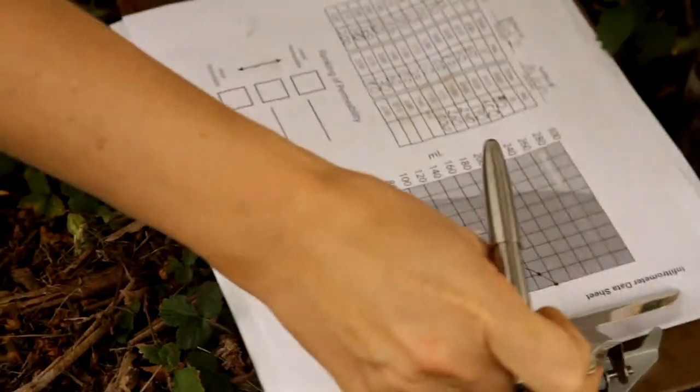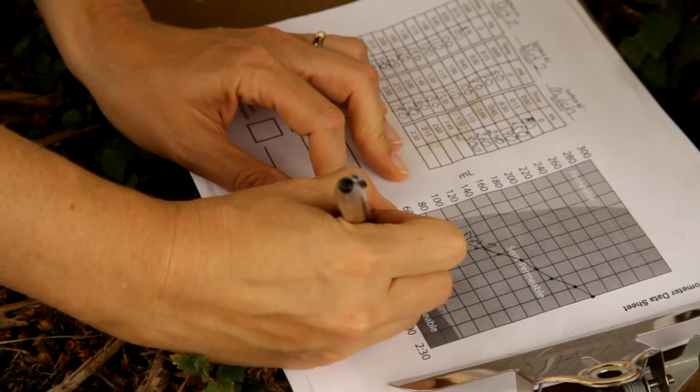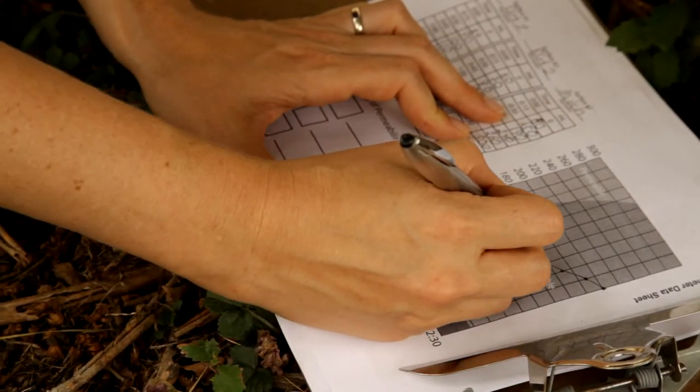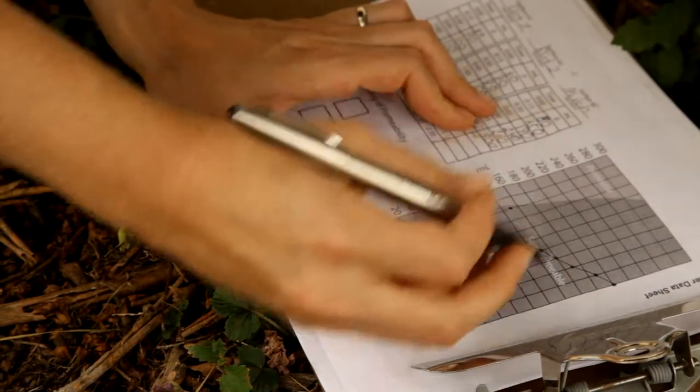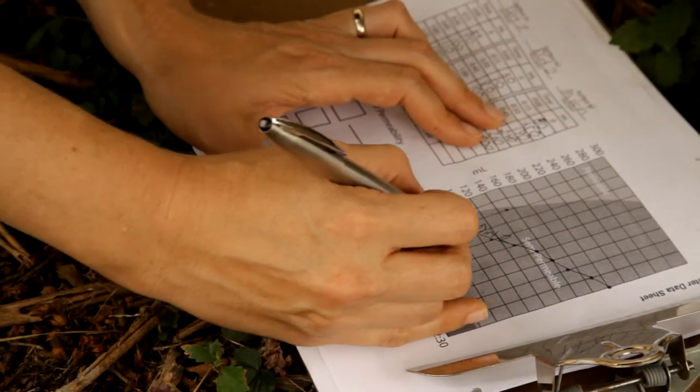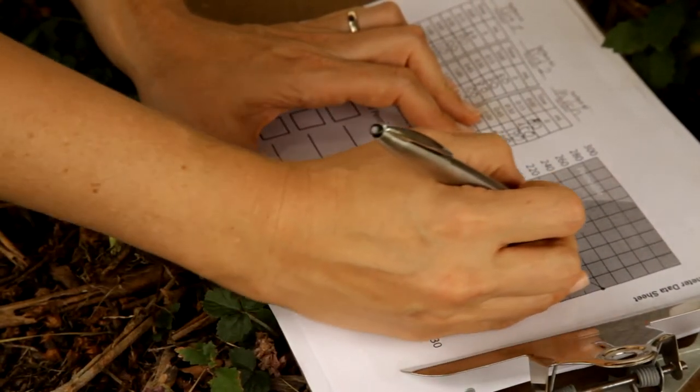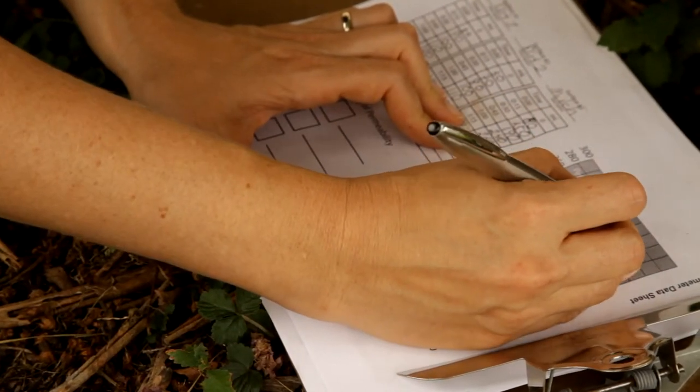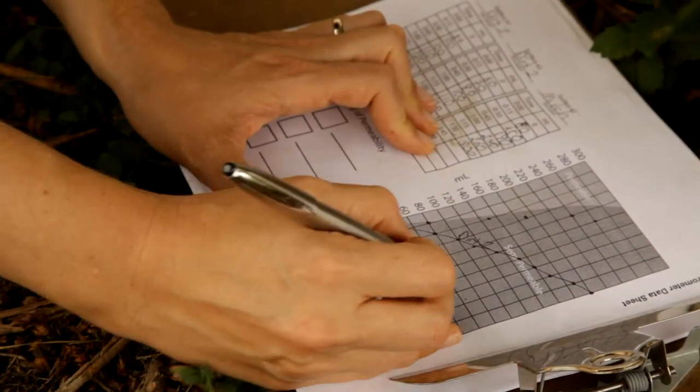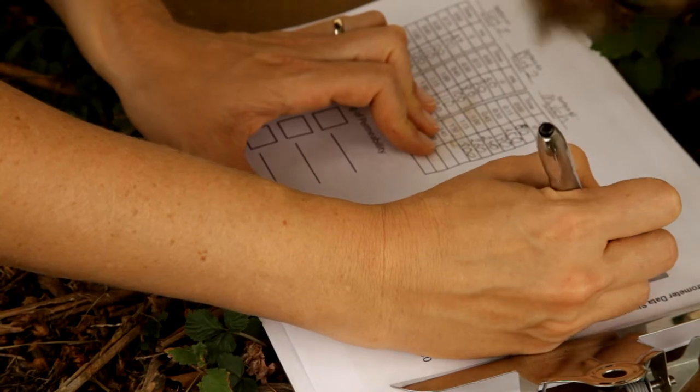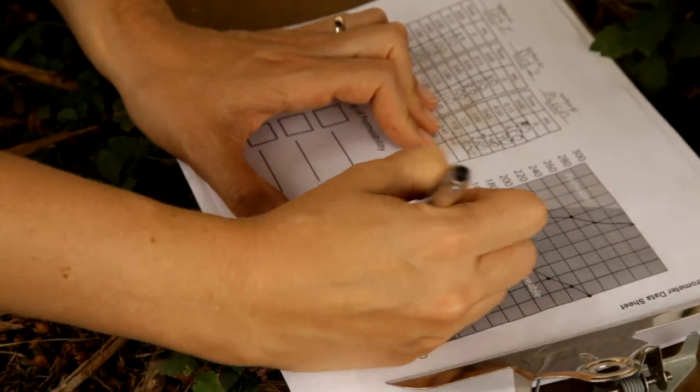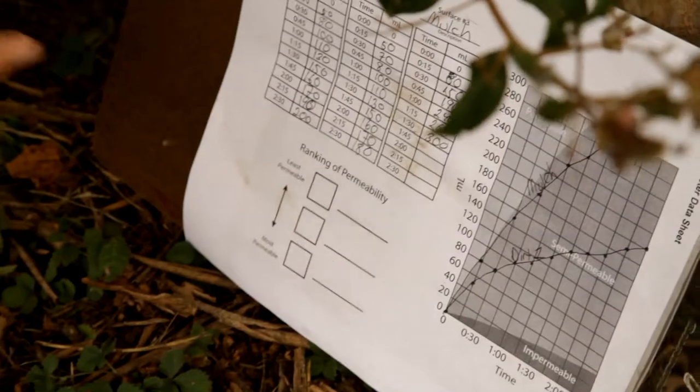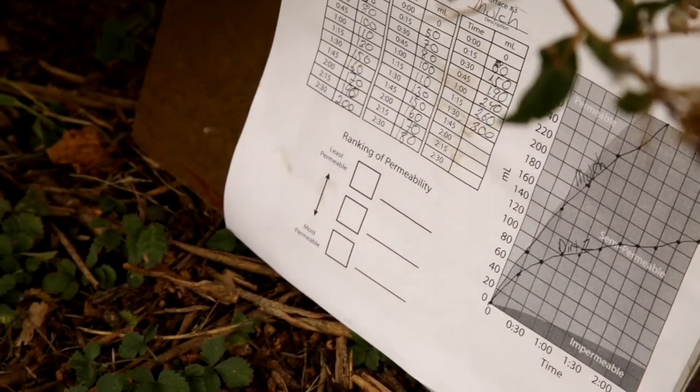Now we'll do the same for our mulch. Zero at zero. At 15 seconds we're all the way up at 80 already. 30 seconds, 150 milliliters. 45 seconds. One minute, we're at 240 milliliters. A minute 15, we're at 260. And at a minute 30, all of our water was gone. Again we'll connect our points and label it mulch.